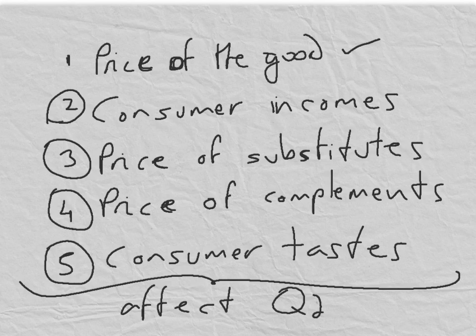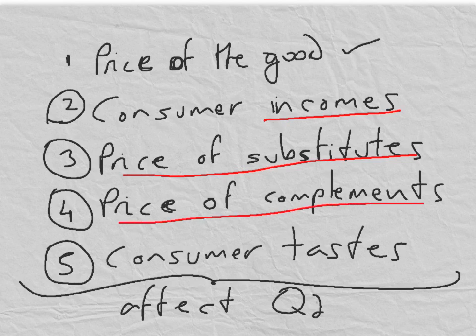These four factors include consumer incomes, the price of substitutes, the price of complementary goods, and consumer tastes. But these are not shown on the demand curve.